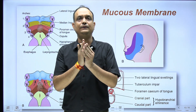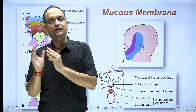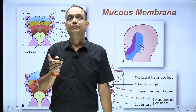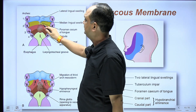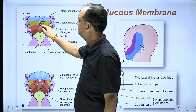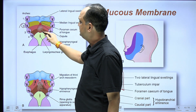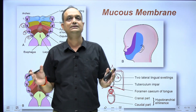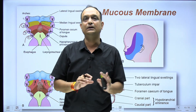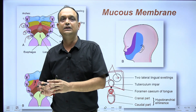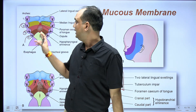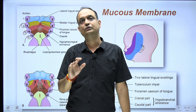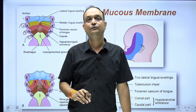There is a difference between Indian books and international authors. Indian authors consider the copula and hypobranchial eminence to be the same structure. International authors differentiate them: the copula is a product of the second arch, while the hypobranchial eminence is a product of the third and fourth arch. However, at the end you will realize that the copula — the component of the second pharyngeal arch — does not contribute to the mucosa of the tongue. So the mucosa of the tongue is contributed by the first, third, and fourth pharyngeal arches.